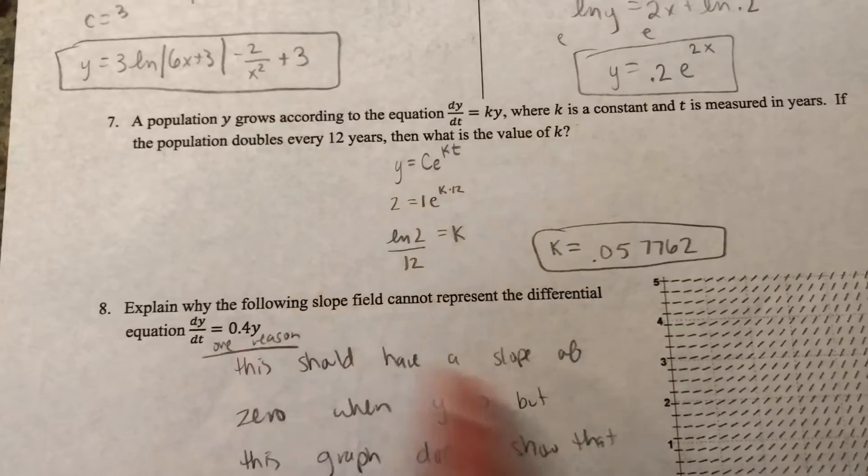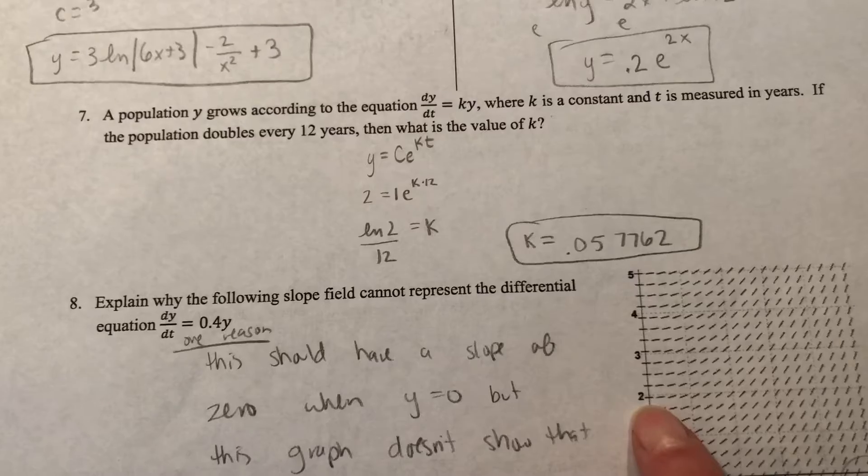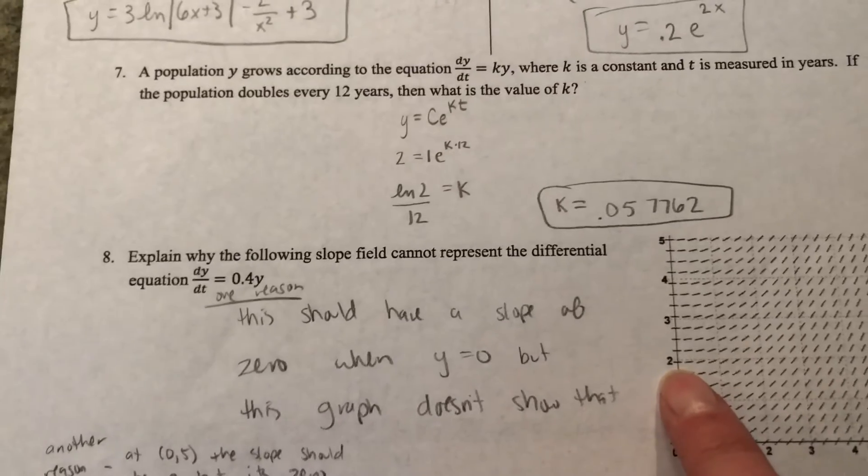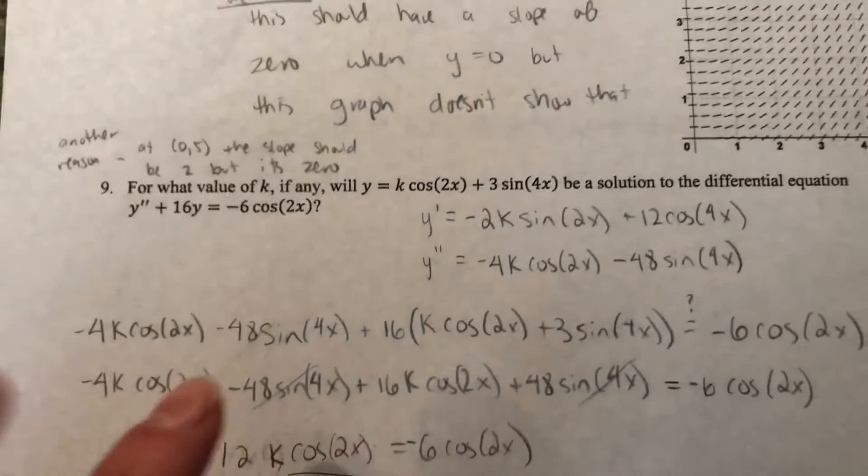But when y is two, for example, it's not 0.8. It's here, it's zero. So you can try to pick a point that doesn't make it work out.